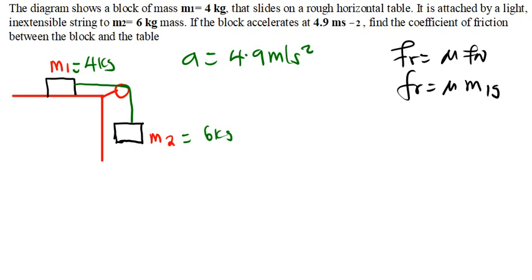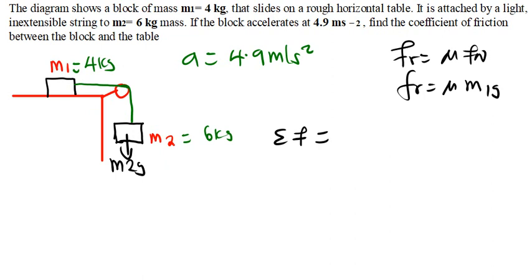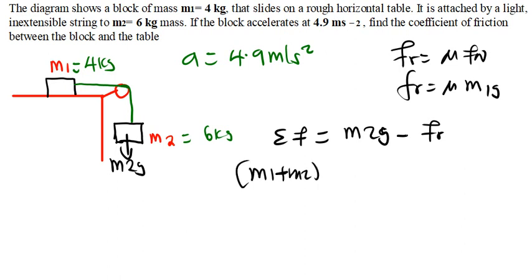I don't know the friction force directly, so I'll use the summation of all forces. Since I've been given the acceleration, I'll use the net force equation. The only force that makes the system move is the weight of M2, so: the sum of forces equals M2 times G minus the friction force. And since we have acceleration, that equals (M1 plus M2) times acceleration.